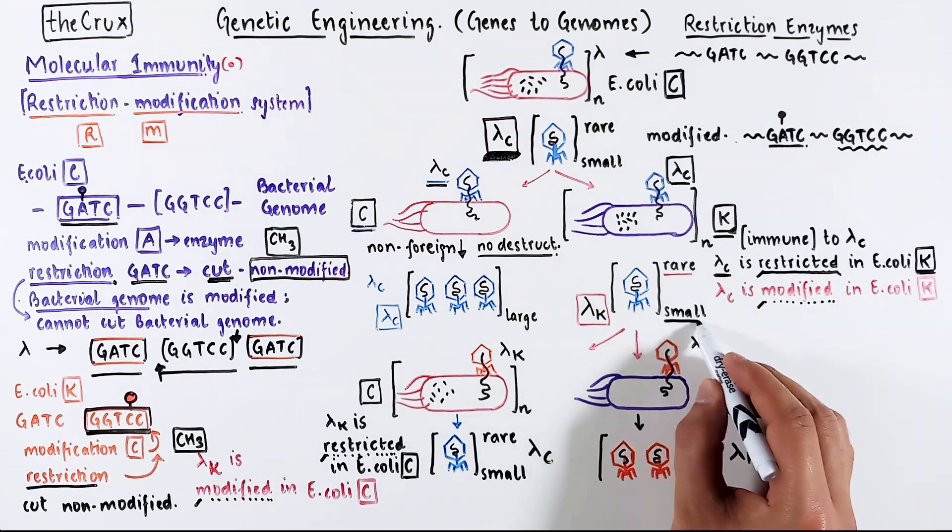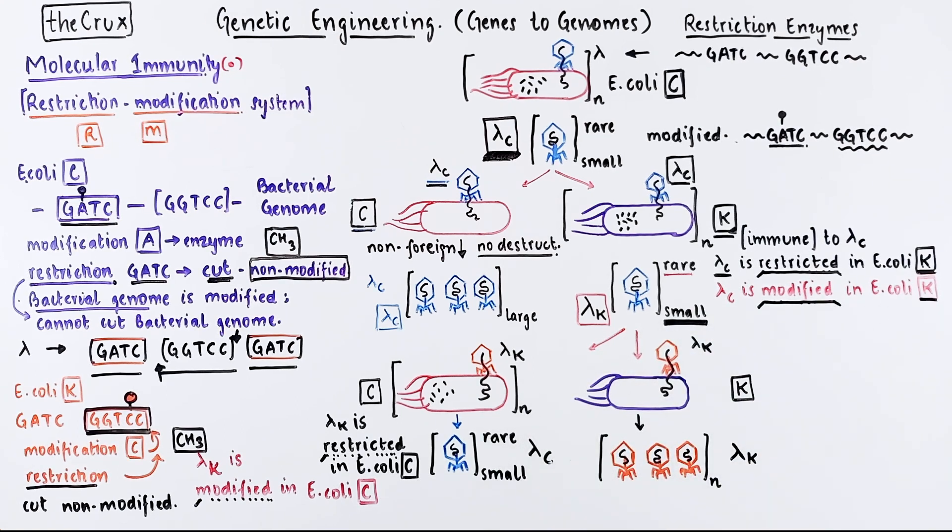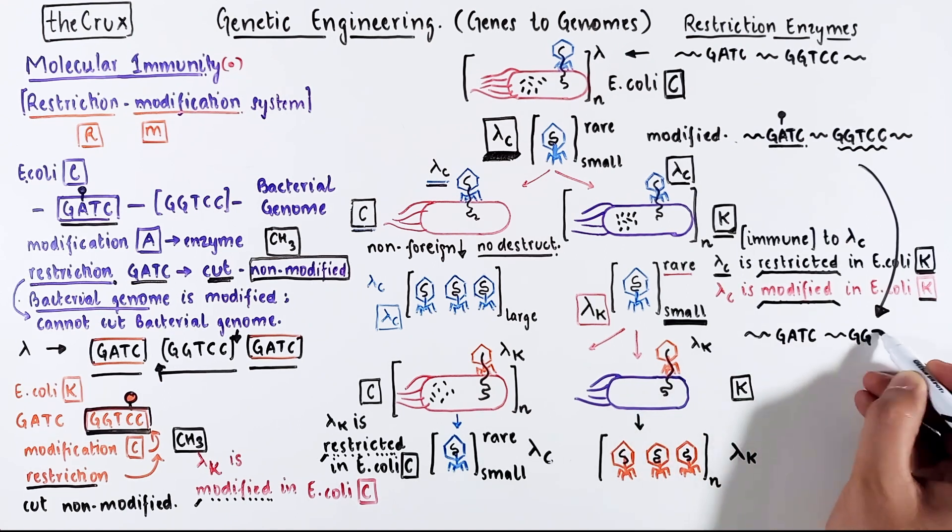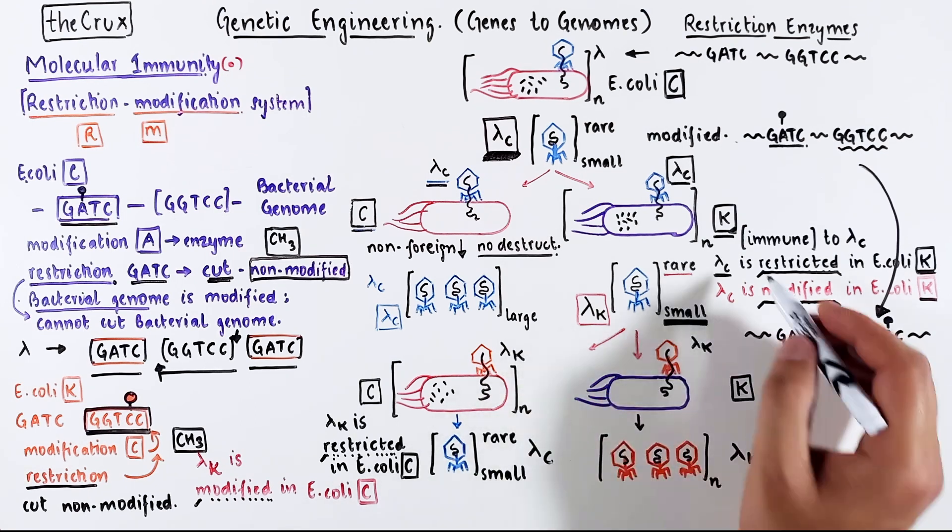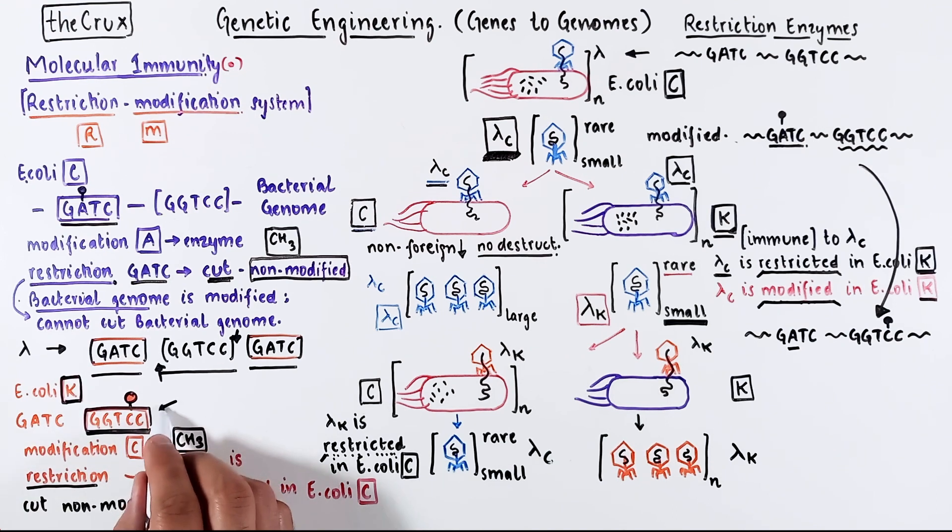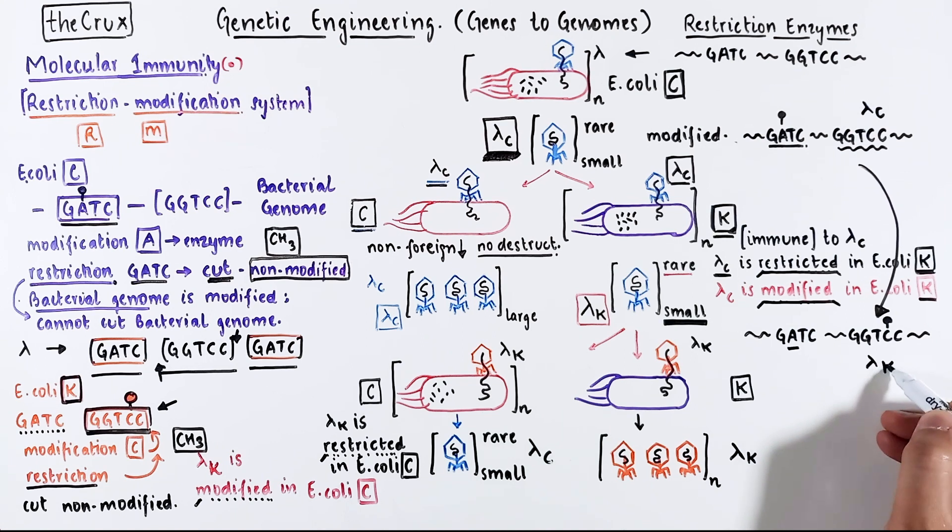But a small amount that does escape the cutting is modified. Therefore, the resulting lambda K genome has a modification of GGTCC. The A in GATC is missing the modification because the enzyme that modifies only modifies GGTCC. It does not care about GATC. The original modification is lost when the DNA is replicated. So we have converted lambda C to lambda K.